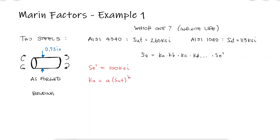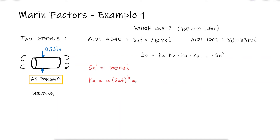The A coefficient and B exponent for the surface factor Ka are given by the surface finish or manufacturing process. For as-forged materials in KSI, we find values of A = 12.7 and B = −0.758. Since both materials will be as-forged, the same A and B apply to the 1040 steel as well. For an ultimate strength of 260 KSI, the surface factor Ka yields a value of 0.188.